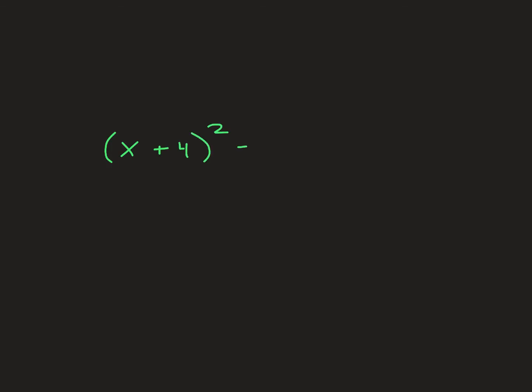Quick tip: if we had (x + 4)² = 4(y − 3), our vertex would be (−4, 3) — you always just flip the signs for your vertex.